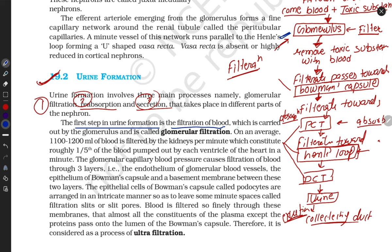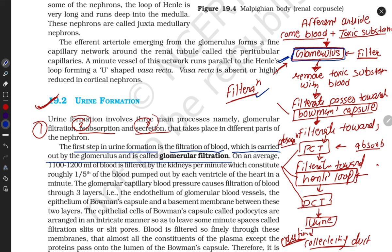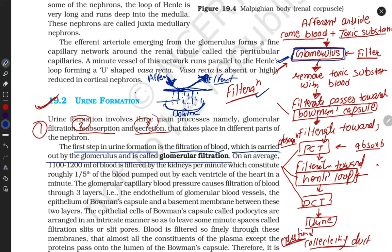Filtration is carried out by the glomerulus — this is called glomerular filtration. The glomerulus is a capillary structure that performs filtration. Small and toxic substances collect in the bowman's capsule, and the pure components are removed via the efferent arteriole which goes with pure blood. The glomerulus capillary filters toxic substances and the bowman's capsule collects all the toxic substances.